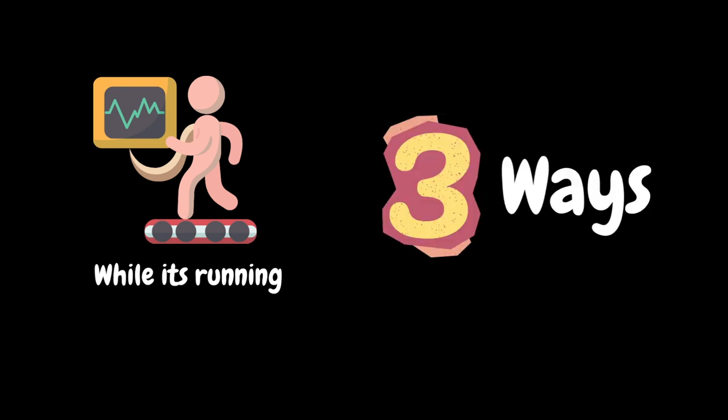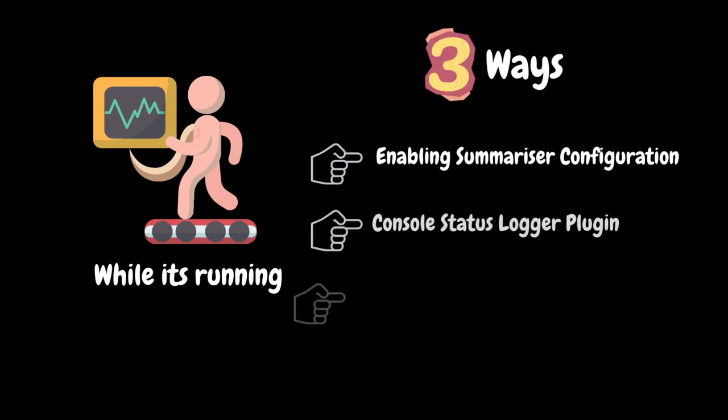There are three ways to view the results while the test is running. The first method is enabling the summarize configuration. Then we have a plugin called console status logger — we can install that plugin and view results while the test is running. And finally, we have configuring a back-end listener with some external database and viewing results using visualization tools like Grafana. We will look at the third approach in detail in the upcoming videos.